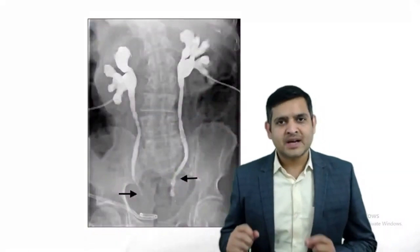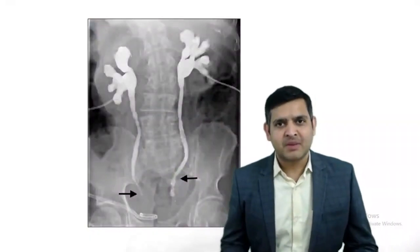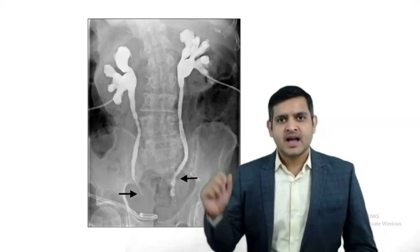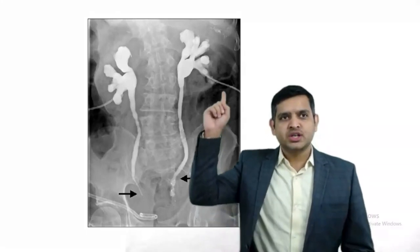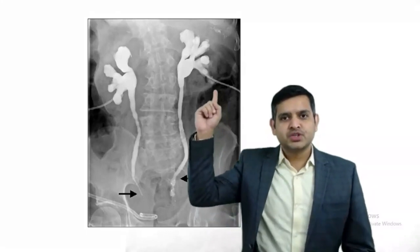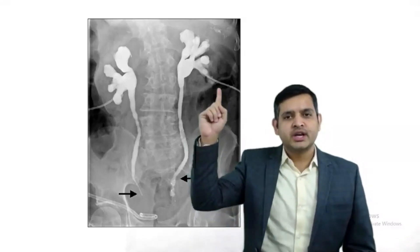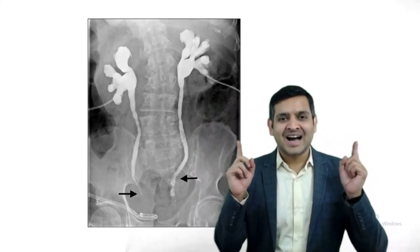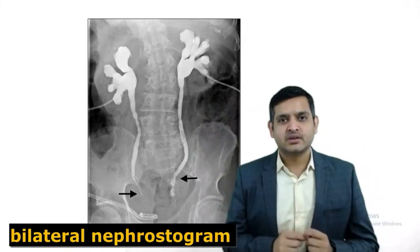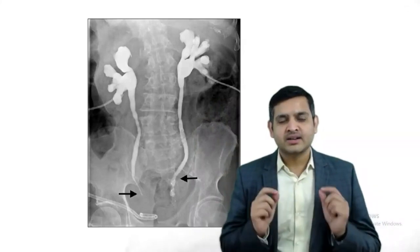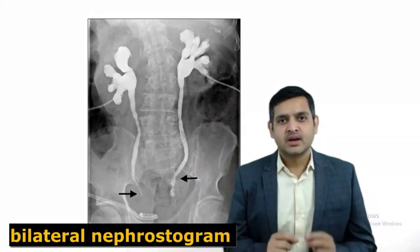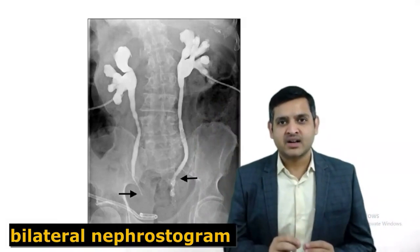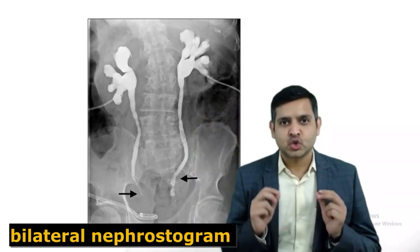If you see opacification of bilateral pelvic calyceal system and you see a tube going into the renal pelvis on either side, you are dealing with a bilateral nephrostogram.